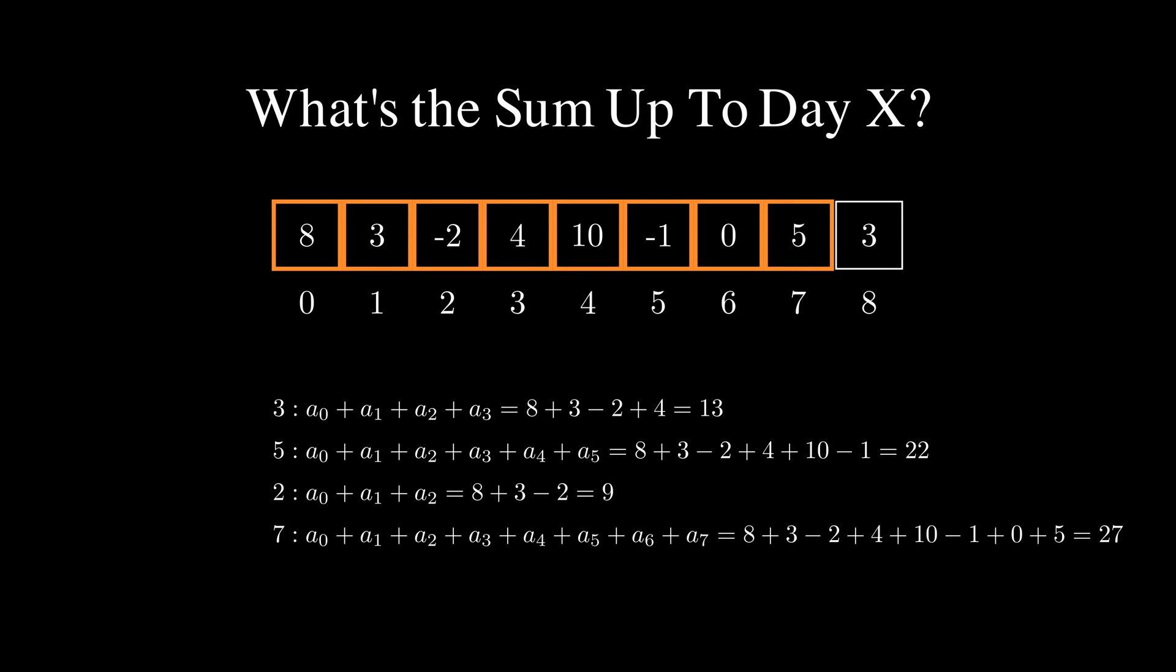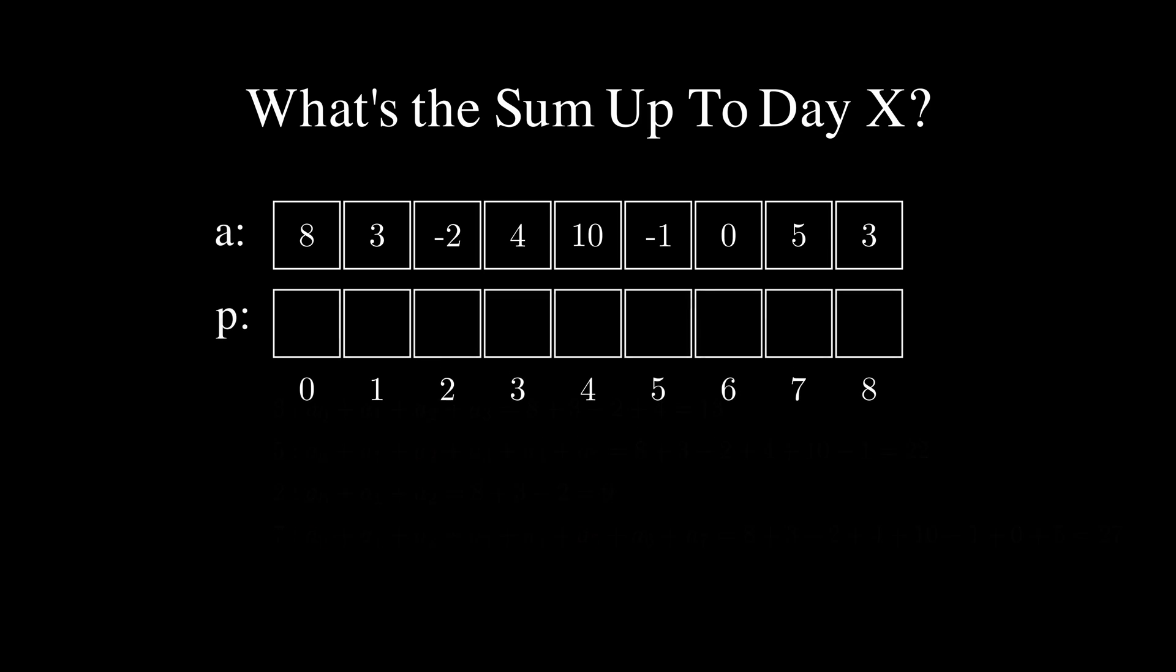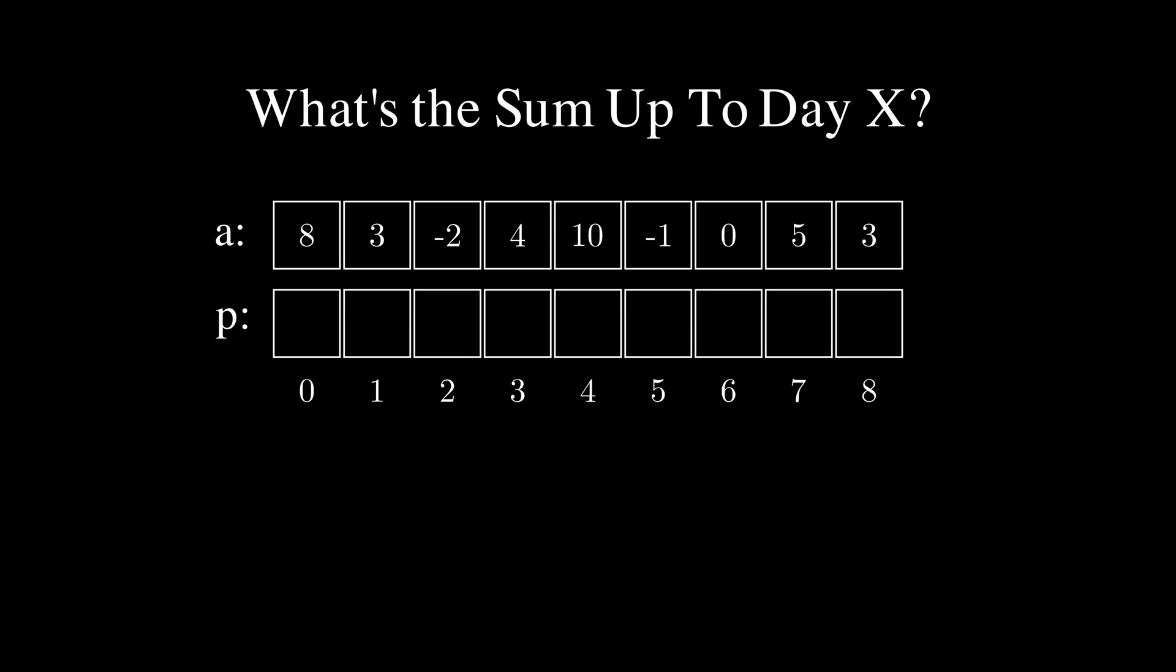Notice how the first part of the computation is always the same. Before calculating the result for 5 we already knew the result for day 3. Before calculating the result for day 7 we already knew the result for day 5. So there is definitely some room to optimize this. To do that let's calculate the performance result for all the days starting from day 0 up until the last day available. Let's call the resulting sum p which stands for the prefix sum. So each element of p would represent the sum up until that day. So answering a question like what is the result of the video performance up until day 7 we can just print the value stored in p at location 7.